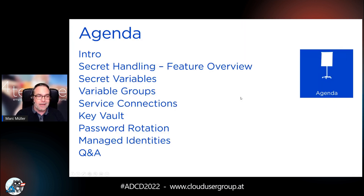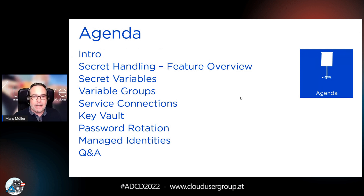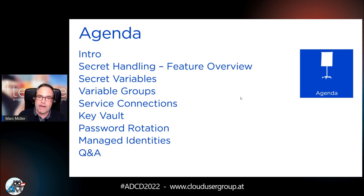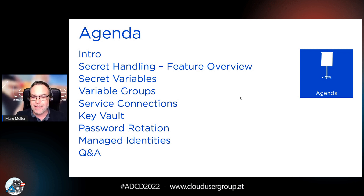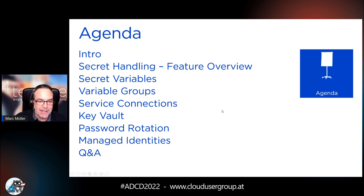So this is our agenda. A quick introduction to the whole setup and environment, then we are diving into Azure Pipelines — how do we deal with secrets there, how do I define and access secret variables, how do I access other services like Azure APIs for ARM deployments, etc. Then we move to application specifics like how we can store our secrets. We'll cover Azure Key Vault, then managed identities — the passwordless way using managed identities.